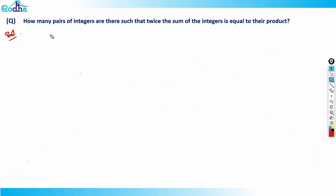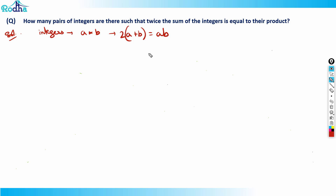First of all, let's assume variables. I'll assume my integers are a and b. So I can write my equation as: twice of (a + b) is equal to a×b. That is, 2(a + b) = ab.